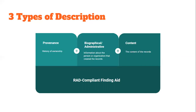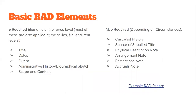When a fonds was created via the day-to-day workings of an organization, this information is called administrative, but when it can be attributed to a single person or family, it's called biographical. Finally, similar to bibliographic description, a RAD finding aid will describe information about the content or scope of the records. Provenance and the content of records may be described at any level, but administrative or biographical information is typically only provided at the fonds level. Similar to Dublin Core, RAD has a basic set of elements. Unlike Dublin Core, these elements aren't optional but required to achieve a minimal level of compliance. These five elements are title, dates, extent, administrative history or biographical sketch, and scope and content. There are also additional elements that are considered required, but may not be usable in all cases.